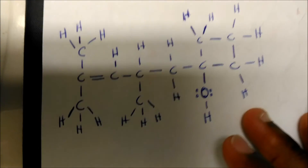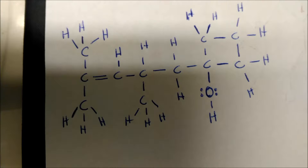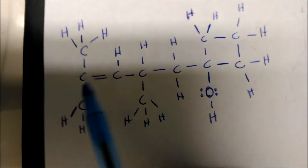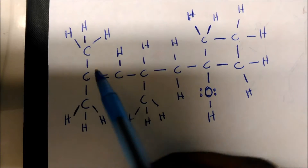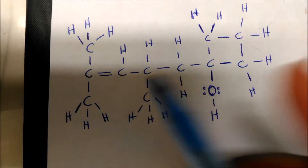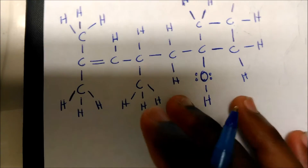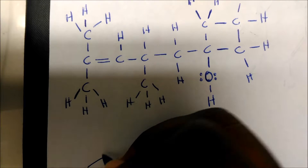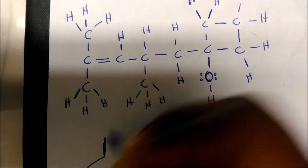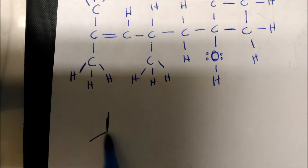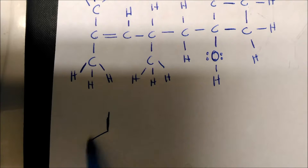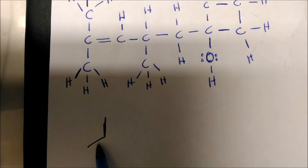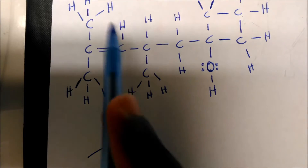Let's look at another one. A lot of things going on here, but again we're going to read it like a book. I see that I have a carbon here that is bonded to two methyl groups. I can represent that by drawing a line and then another line. We have a carbon here that is bonded to two methyl groups, so this structure right here took care of all this front structure.